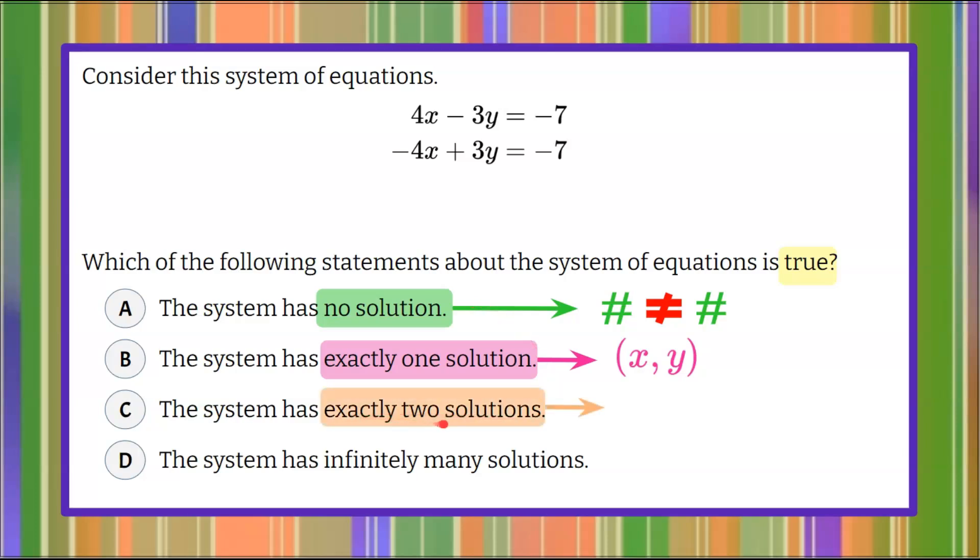C asks for exactly two solutions. This will never happen. Two lines, graphed in a coordinate plane, can never intersect at two points. And the solution to a system is the point of intersection. So we're going to eliminate answer choice C right off the bat. Never can this happen.